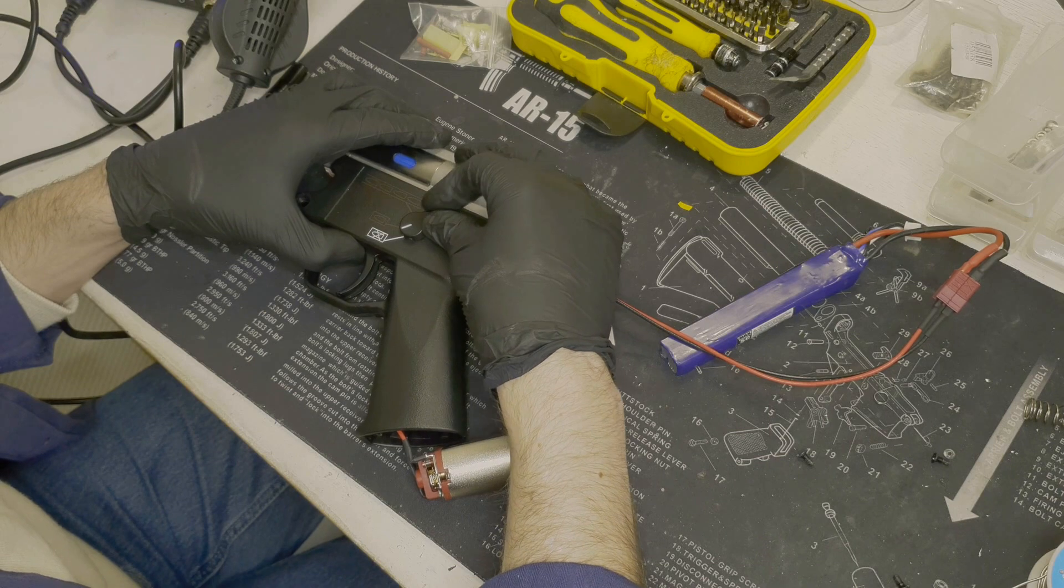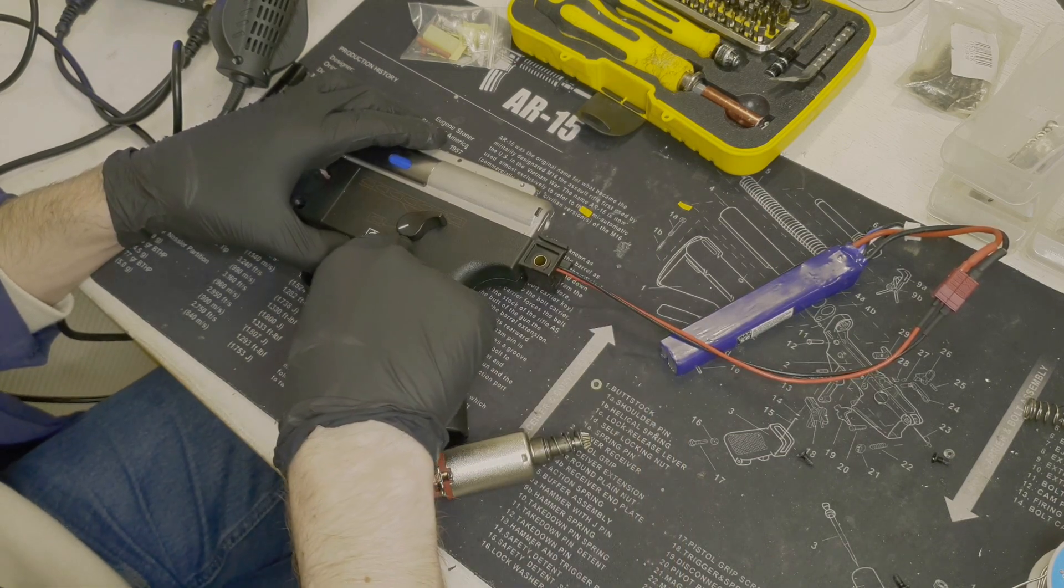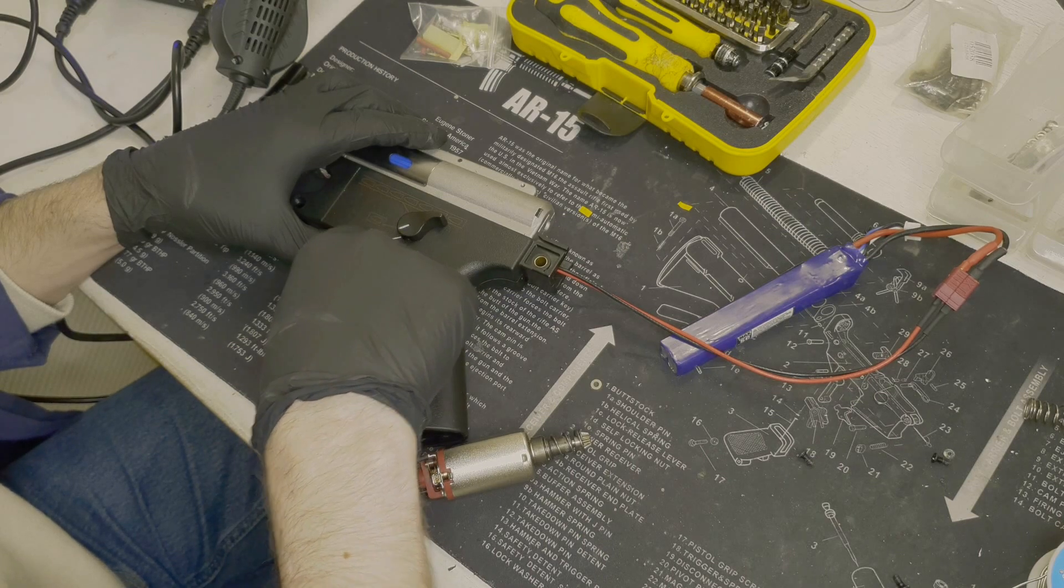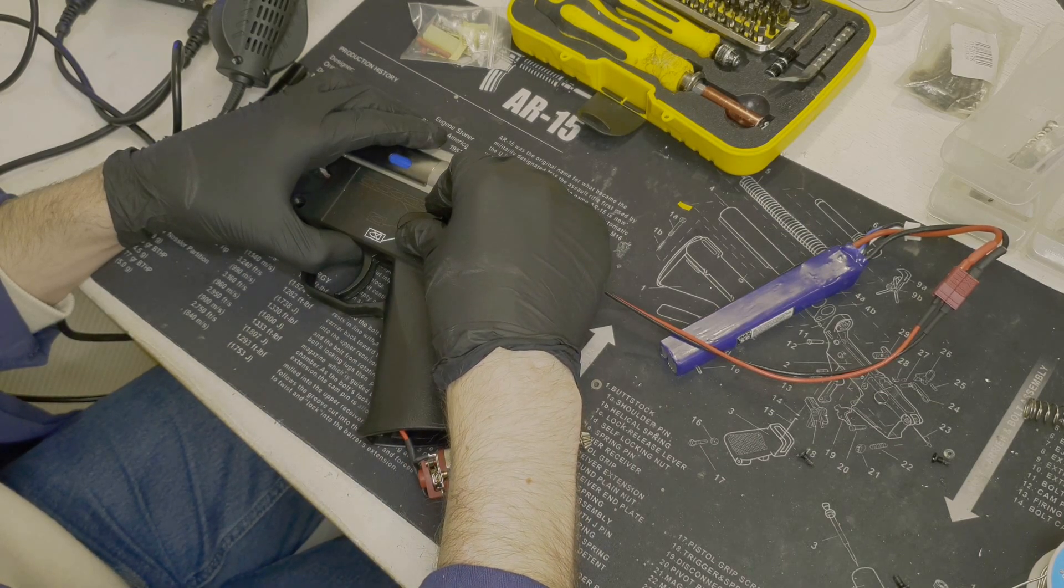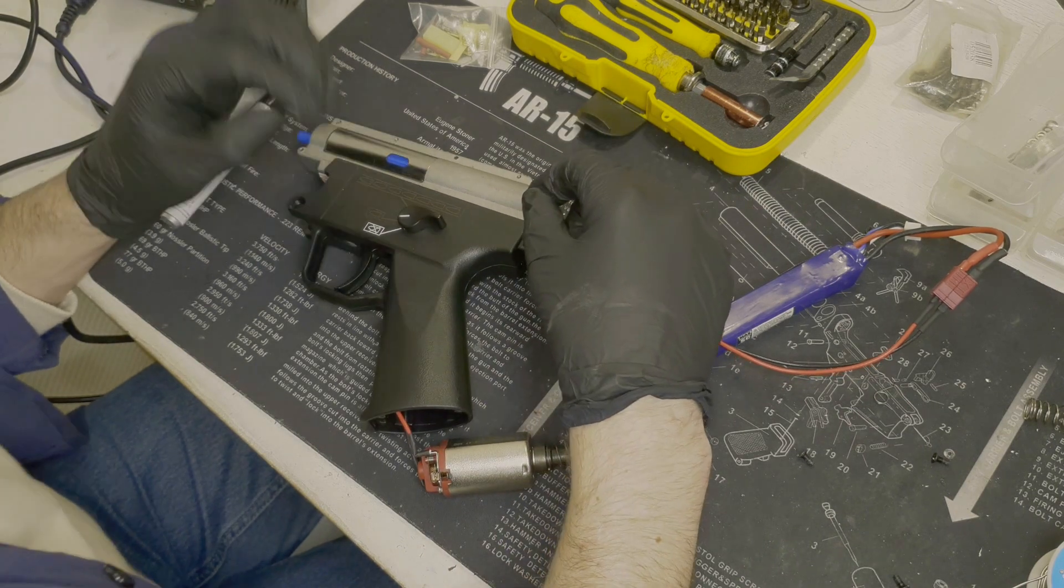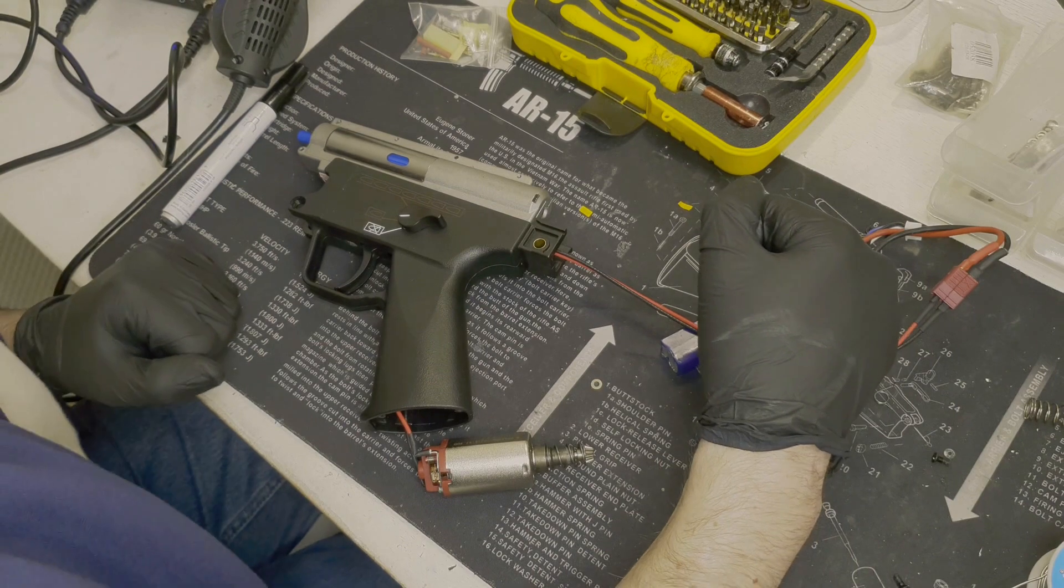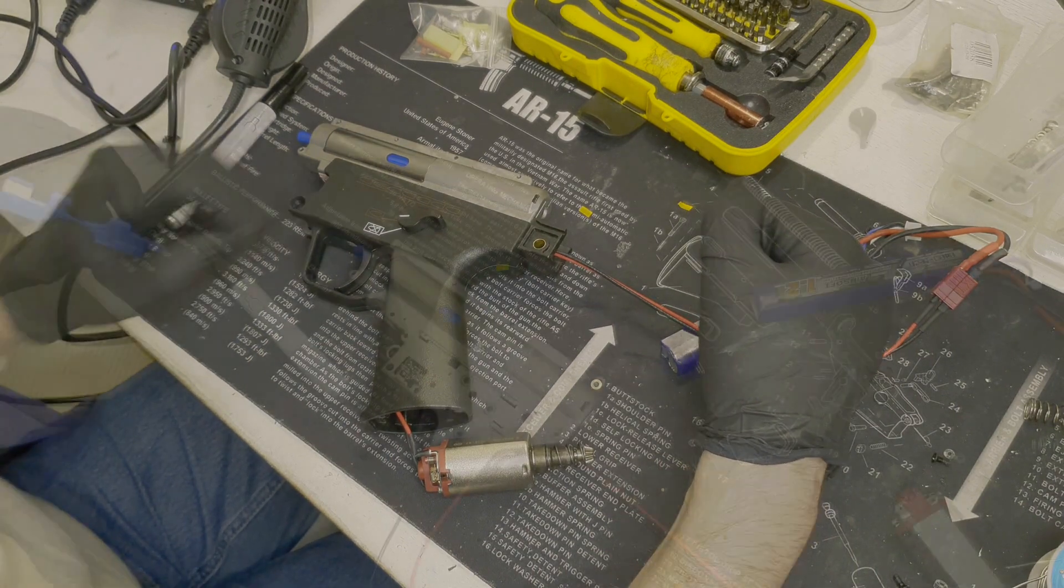So we need to adjust that. This way is pretty easy because when you look at the selector then you can see how much travel it still needs to go into the correct position. Now that you know that, you can remove the gearbox again and then I'm going to show you how you adjust it.